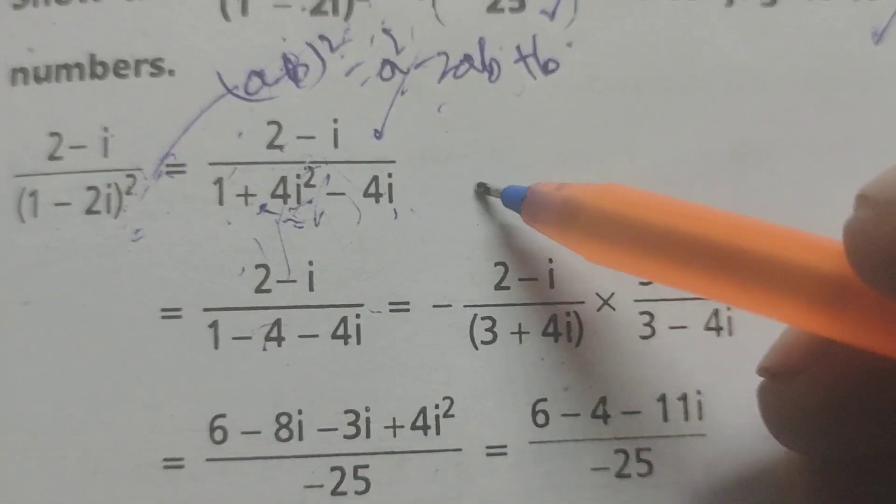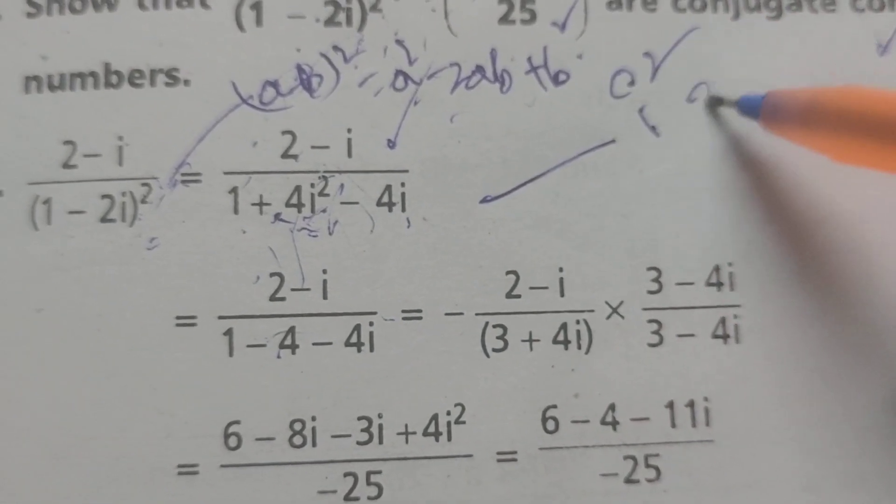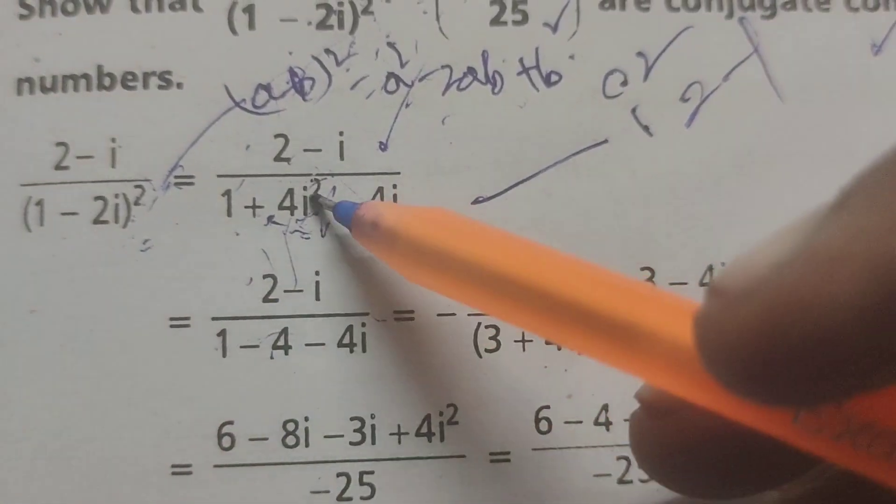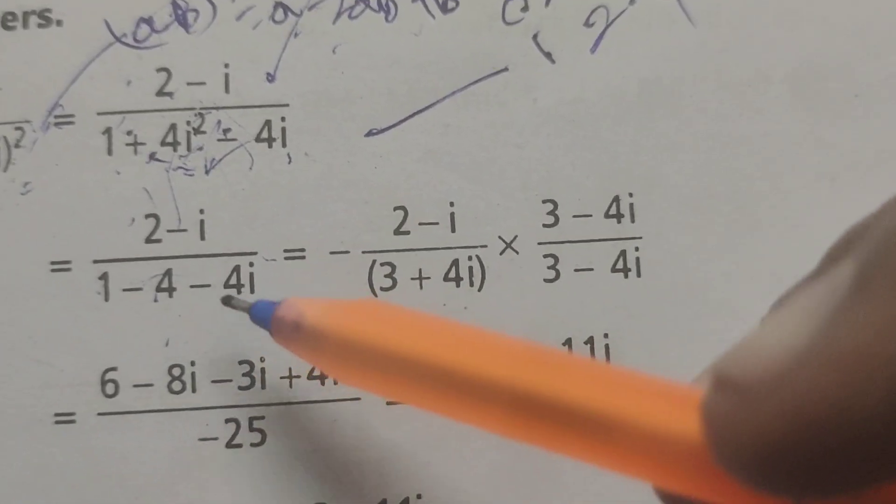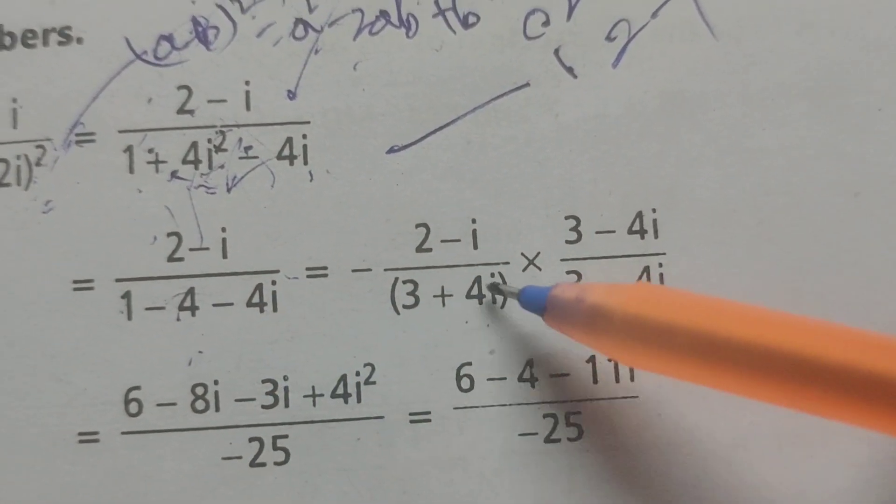(2-i)/(1 + 4i² - 4i). Since i² = -1, therefore here -4, -4i. So (2-i)/(3+4i).